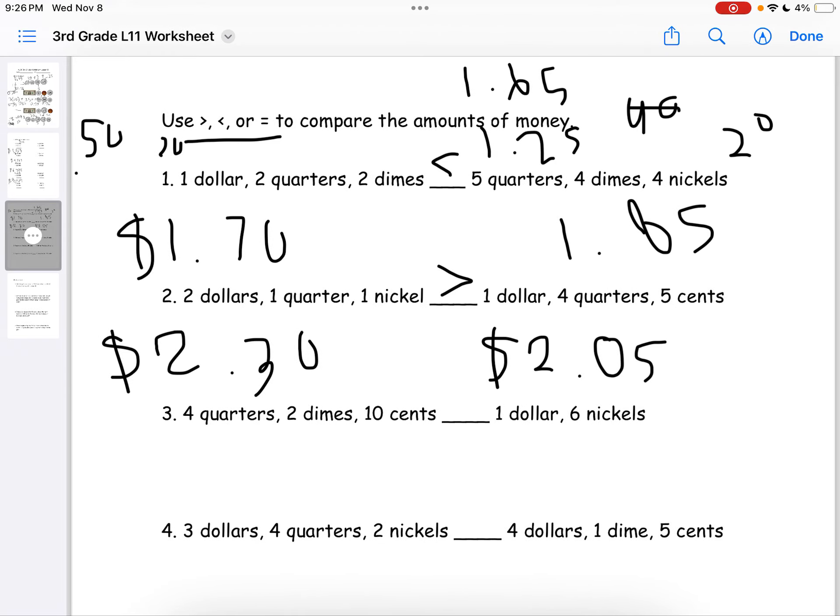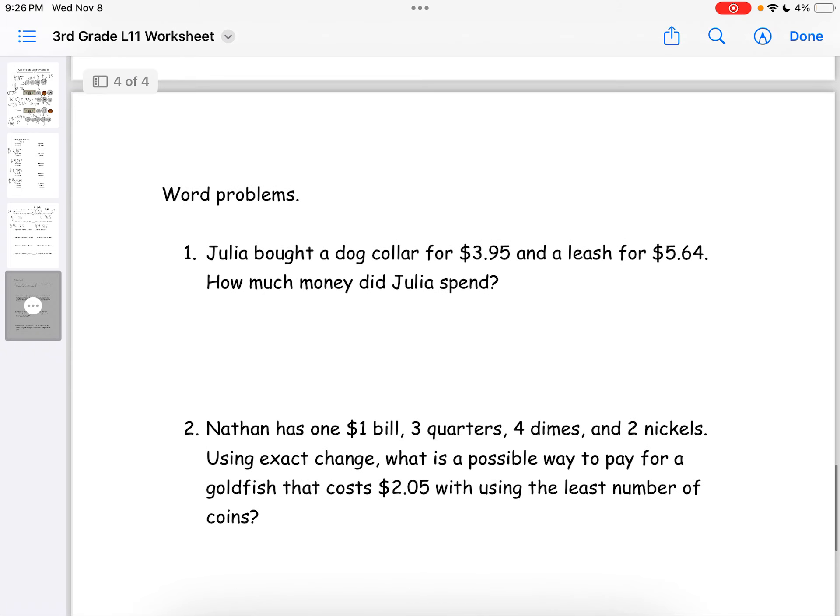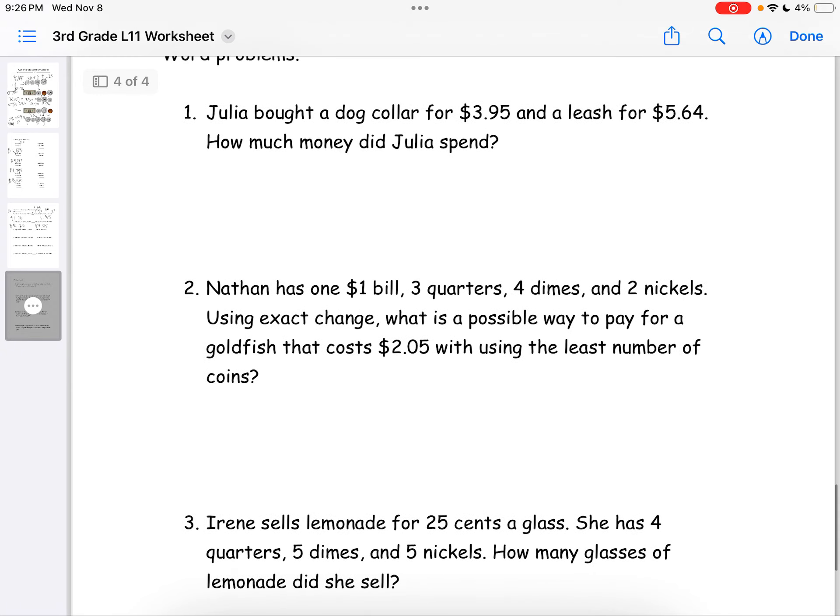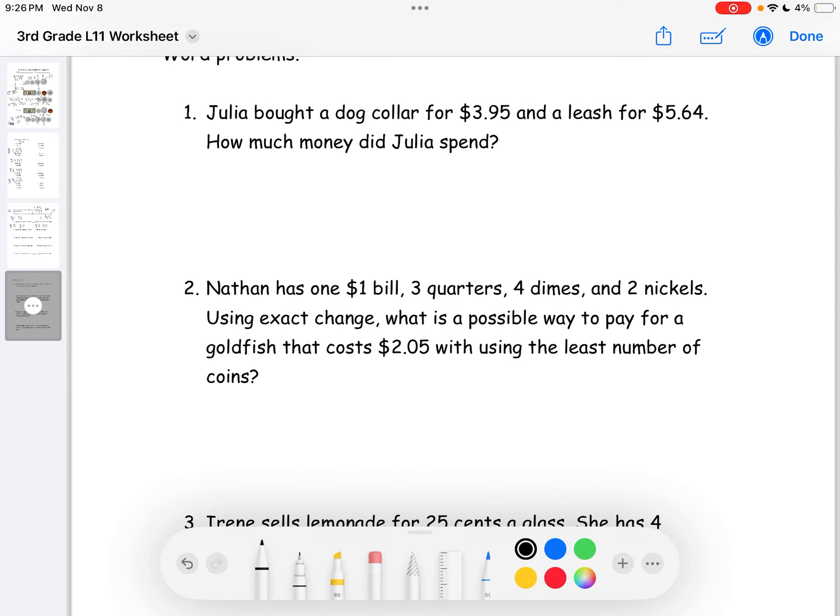Moving on to the last page which are word problems. Number 1. Julia bought a dog collar for $3.95 and a leash for $5.64. How much did Julia spend? So, we just do $5.64 plus $3.95.